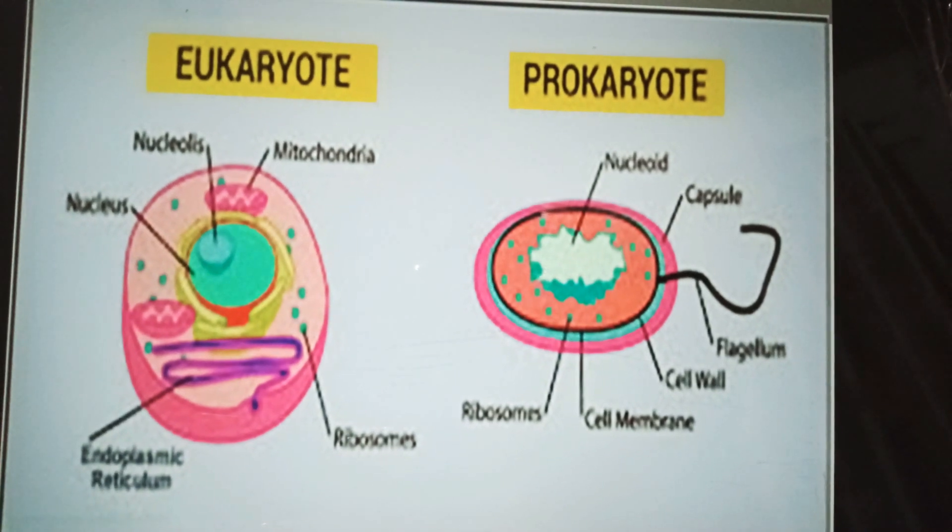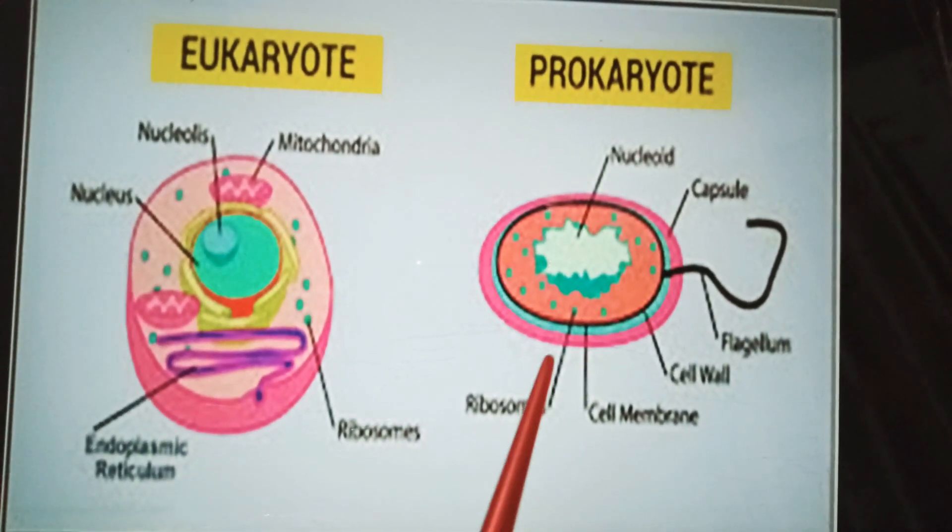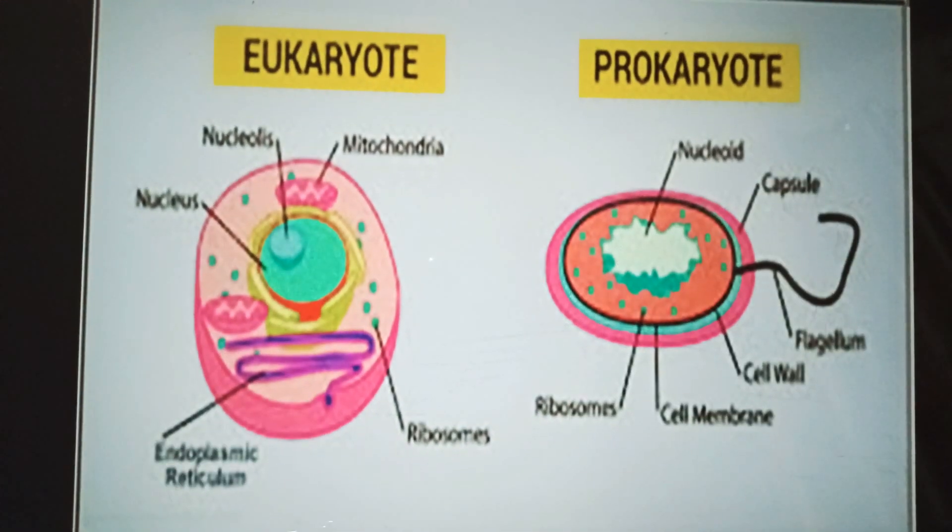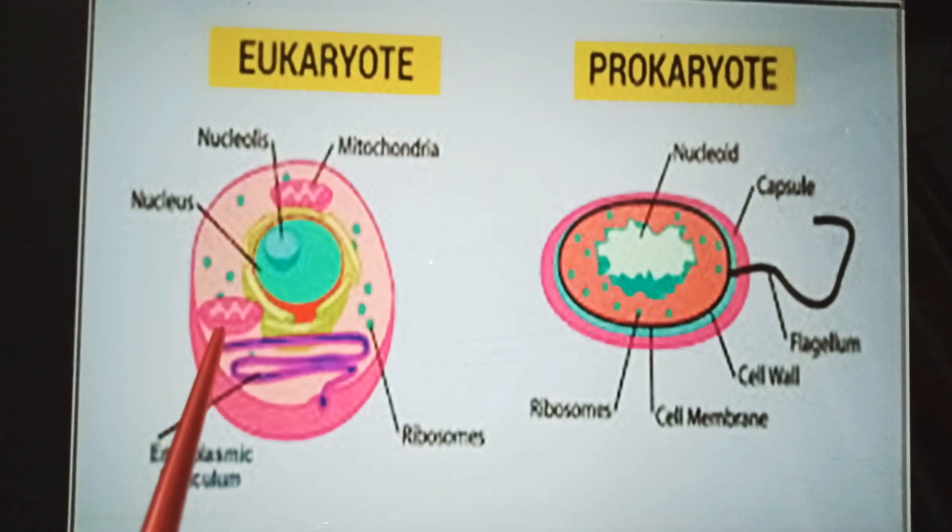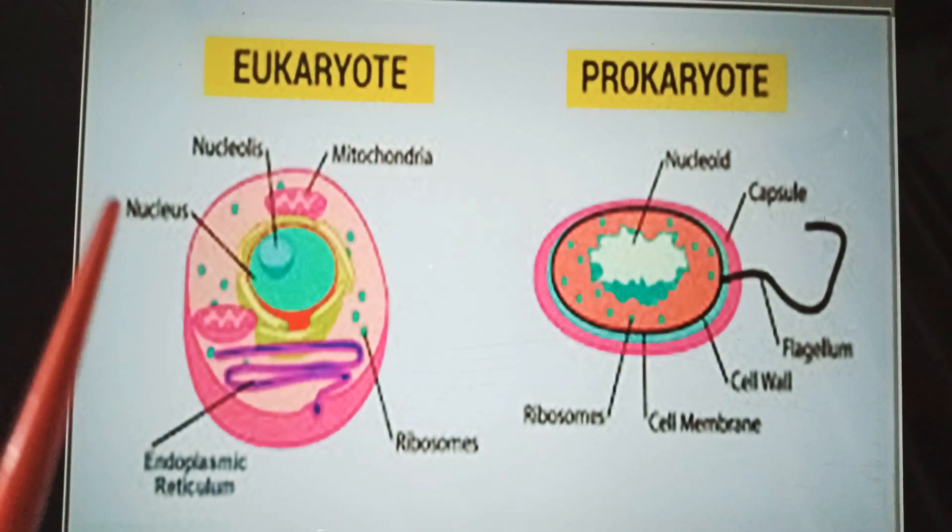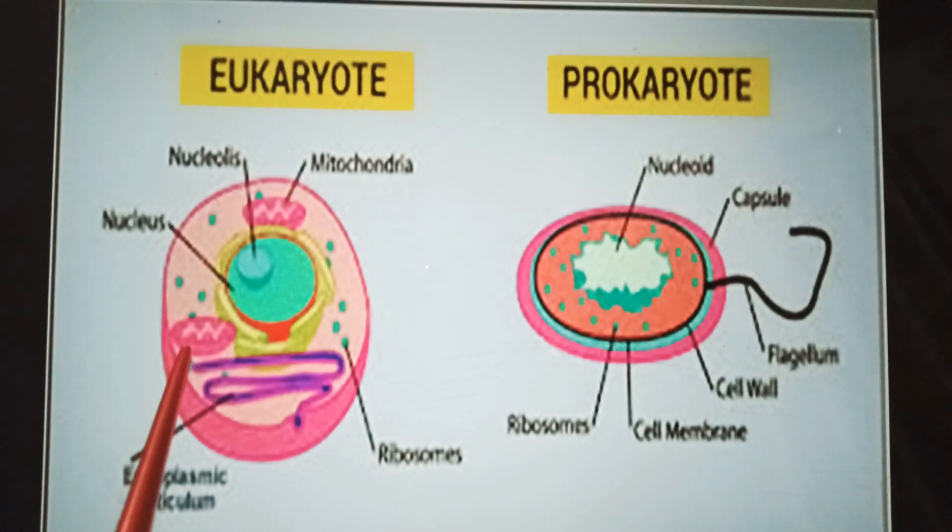Eukaryotic cells are on average 10 times larger than prokaryotic cells.